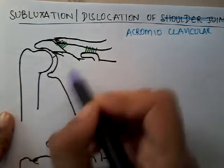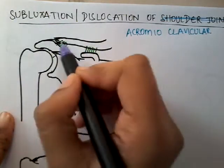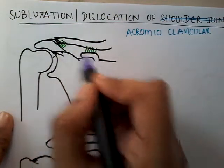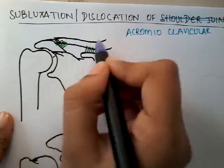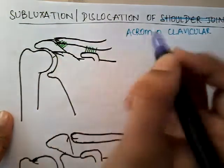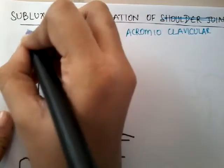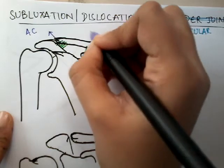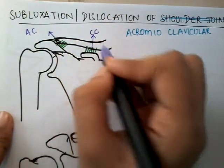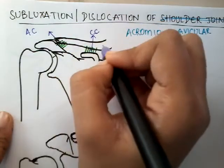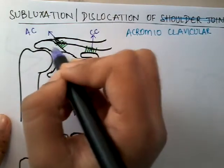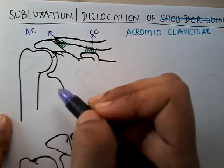This is the humerus, scapula, acromial process, and clavicle coracoid process. This is the coracoid process, acromion process, clavicle, scapula, and humerus. This is the acromioclavicular ligament. The ligament connecting the coracoid process with the clavicle is the coracoclavicular ligament. The ligament connecting the acromion process with the clavicle is the acromioclavicular ligament.